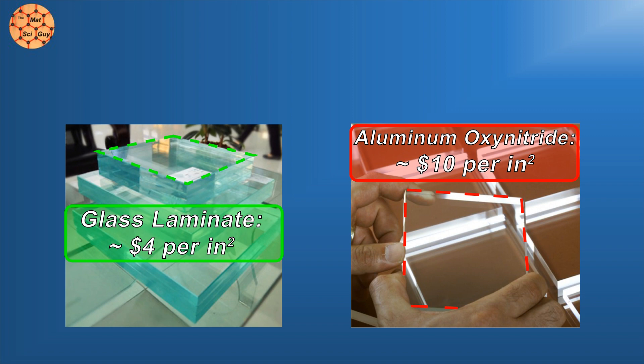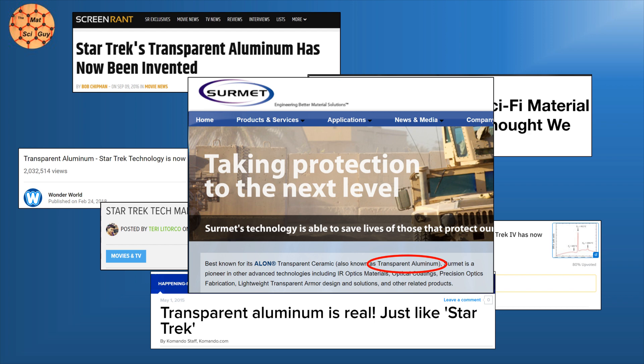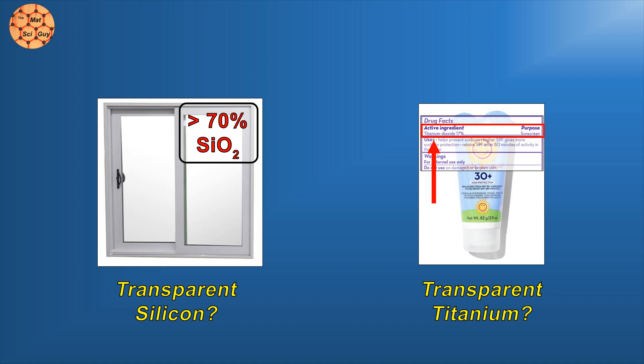Naturally, the internet has rushed to call this material transparent aluminum, and it's even marketed as such in some cases, but I do have a few issues with this label. We don't call regular window glass transparent silicon, or sunscreen transparent titanium. Labeling an oxide or nitride like this as if it's a metallic material seems a bit of a stretch.